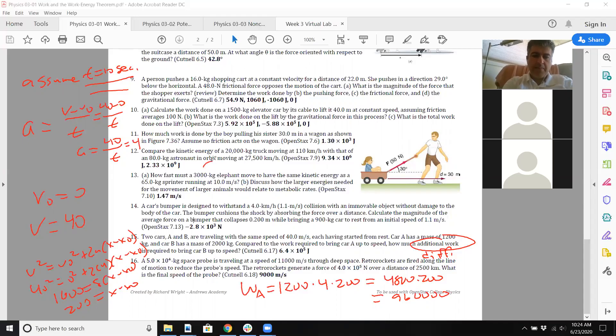So for car B, you want to get up to the same speed. How much additional work is required to bring car B up to speed? So this mass is 2000. It's got a different acceleration. Actually, I'm a little confused about this one because you'd assume it's traveling the same distance, but maybe it's acceleration.